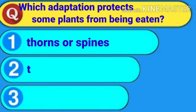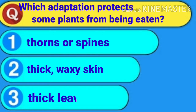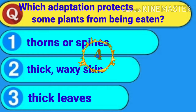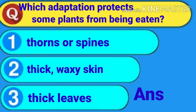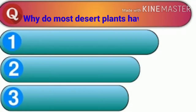Which adaptations protect some plants from being eaten? First option: thorns or spines. Second: thick waxy skin. Third: thick leaves. You have five seconds to try yourself. The answer is first — thorns and spines.